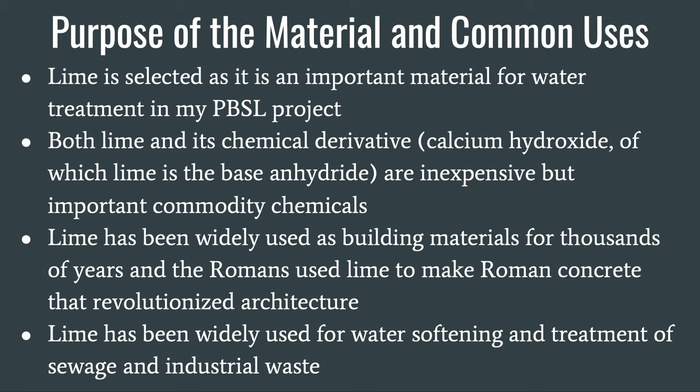The purpose of lime and its material in common uses are listed below. Both lime and its chemical derivative calcium hydroxide, of which lime is a base anhydride, are inexpensive but important commodity chemicals. Lime has been widely used as building materials for thousands of years, and the Romans used lime to make the Roman concrete that revolutionized architecture. Lime has also been widely used for water softening and treatment of sewage and industrial waste.